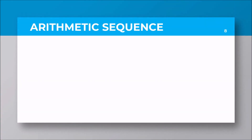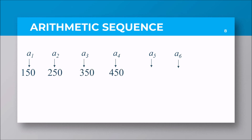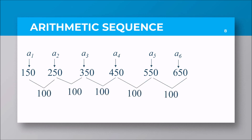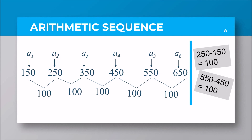To find the common difference D, subtract any term from the one that follows it. From our warm-up activity, the 100 pesos being added is the common difference. If 100 is not given, you simply look at the given sequence and subtract any term from the one before it. Is the meaning of arithmetic sequence clear to you?